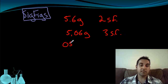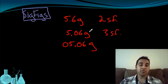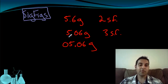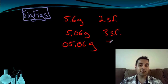Now let's try 05.06 grams. All we've changed from the previous measurement is that we tacked on a 0 in the front. But does that 0 actually tell us any more about the measurement? Does it make us any more certain? Not really. We knew that it was only 5, so saying 05 is not really significant. So this is still three significant figures.